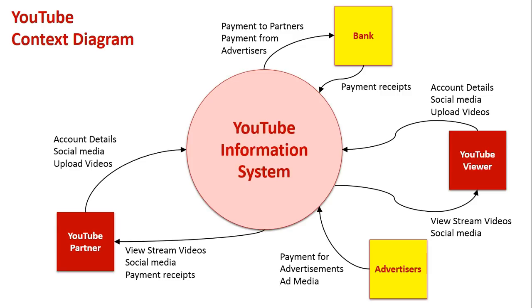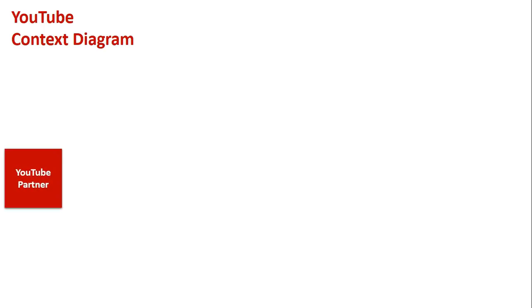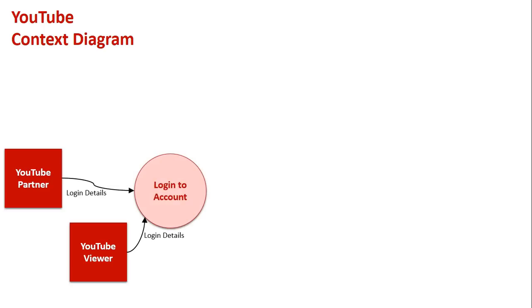That was the context diagram for YouTube. Now let's look at it from the standpoint of a data flow diagram. We're going to start with our external entities again - both the YouTube partner and the YouTube viewer. As we saw from the context diagram, these two pretty much send and receive the same type of data from the system, barring the area of payment. The first step for both is to log in - they enter their login details to their account.